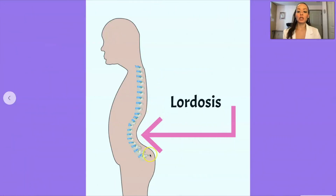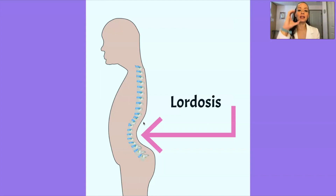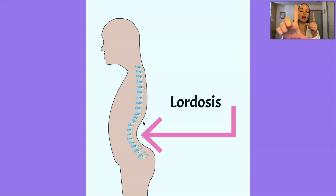Here is a picture of what lordosis looks like — you see that exaggerated curvature of the spine. Think of the letter L: it curves like this. So for kyphosis, it makes a C sound and looks like this; and for lordosis, you make an L with your fingers and the spine curves in that direction. If you need an additional visual aid, here are both.